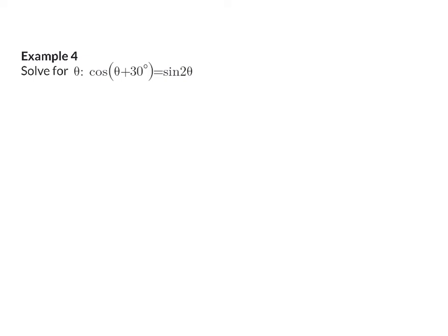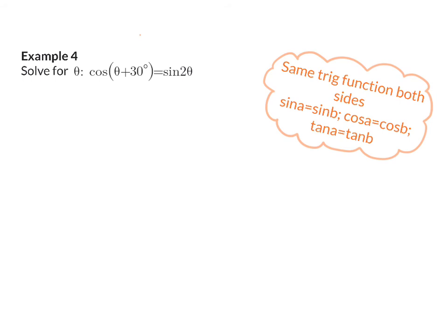In example four, we again have sin and cos but this time with different angles — (θ + 30°) and (2θ). We use the third method: when we have the same trig function on both sides. We don't have the same trig function yet, so we manipulate using co-functions. Keeping the left side as cos(θ + 30°), I rewrite the right side as cos(90° − 2θ), because sin and cos are co-functions and the original angle and new angle must add up to 90°.